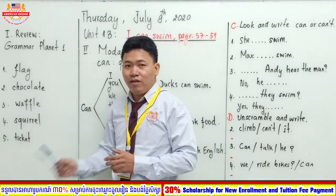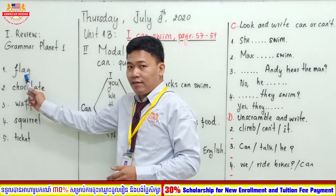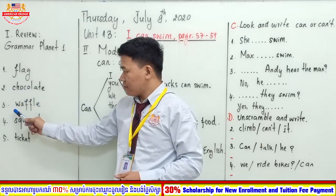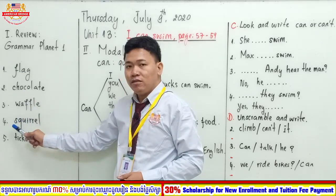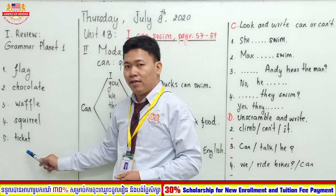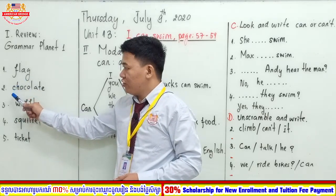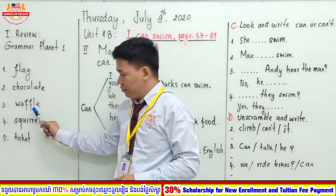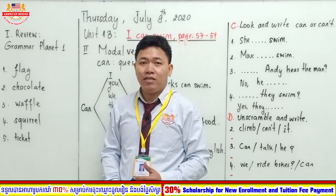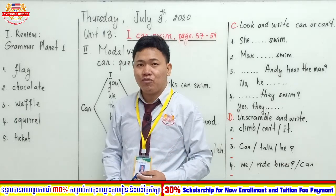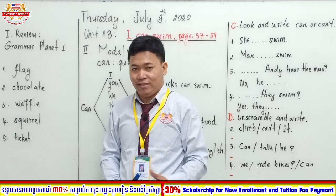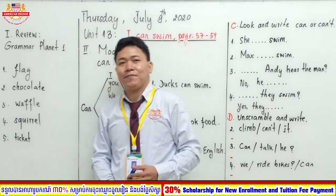Today we will review five words together. Everyone: fleck, chocolate, waffle, squirrel, take it. Can you tell me the word fleck? Fleck is a piece of cloth that represents a country or a nation. For our flecks, we have color red, color blue, and color white. How about chocolate? Chocolate is a sweet food made from cacao seed.